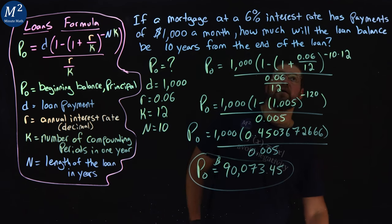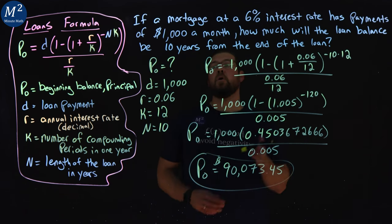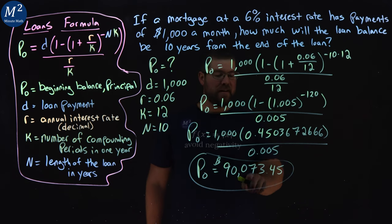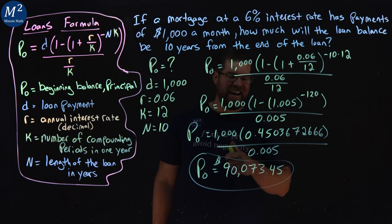And so, how much will the loan balance be 10 years from the end of the loan? It'll be $90,073.45.